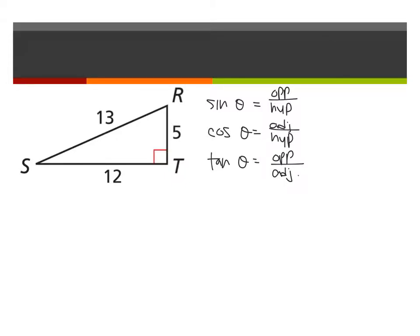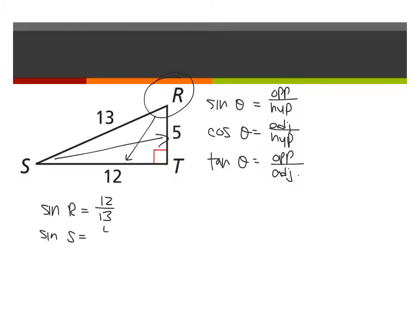Let's take a look at this example. What if we are asked what sine of angle R is? Sine refers to the ratio between the opposite side length and the hypotenuse. The opposite side length from R is 12, and the hypotenuse is 13. What if we were asked sine of S? Looking from S, 5 is the length of the opposite leg and 13 remains the hypotenuse.